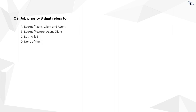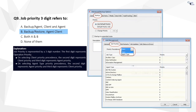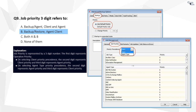Question 9. The correct answer is B. Job priority is represented by a three-digit number. The first digit represents operation priority — that is, backup, restore, auxiliary copy, etc. The second and third digits can be toggled between agent and client.